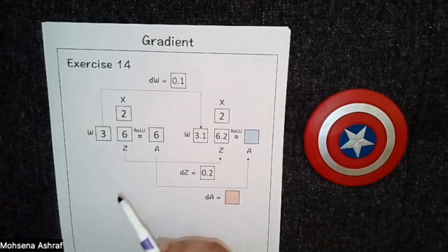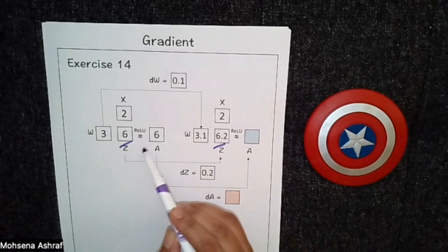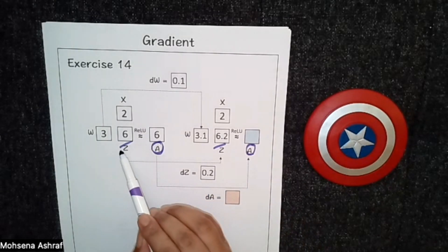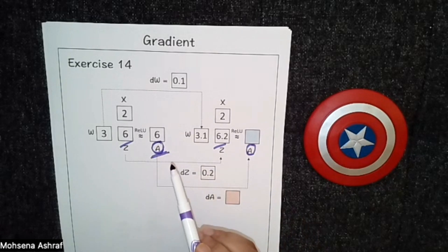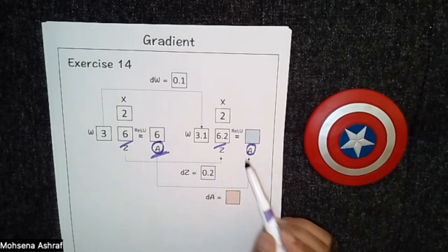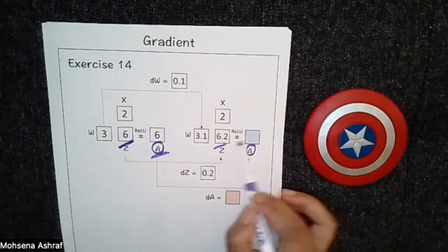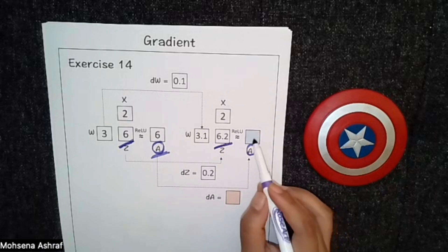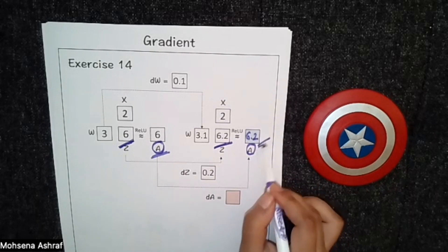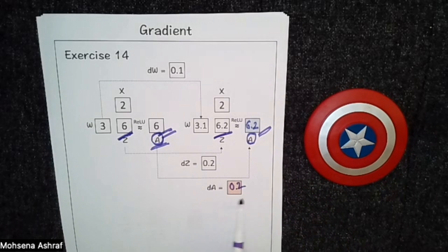Now this exercise introduces a small change. In the previous exercises we only had z as the output, but now we have another variable a, meaning we apply ReLU on z and the final output is a. Let's calculate the values: if we apply ReLU on z, as it is a positive value, we get 6. And the updated z is also positive, so ReLU returns 6.2. So the change in a: 6.2 − 6 = 0.2, meaning da = 0.2.